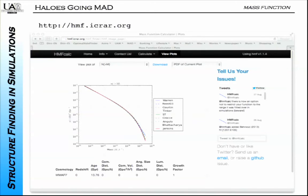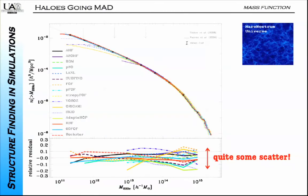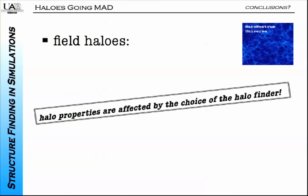That scatter is also convolved with different simulations, so errors from simulations propagate into this as well. But here, we asked every code to use the same analytical definition. In the second workshop, we did not trust the code developers anymore to use the same definition, so we outsourced the calculation of the mass. That was a lesson we learned. The V_max function showed an even larger scatter.